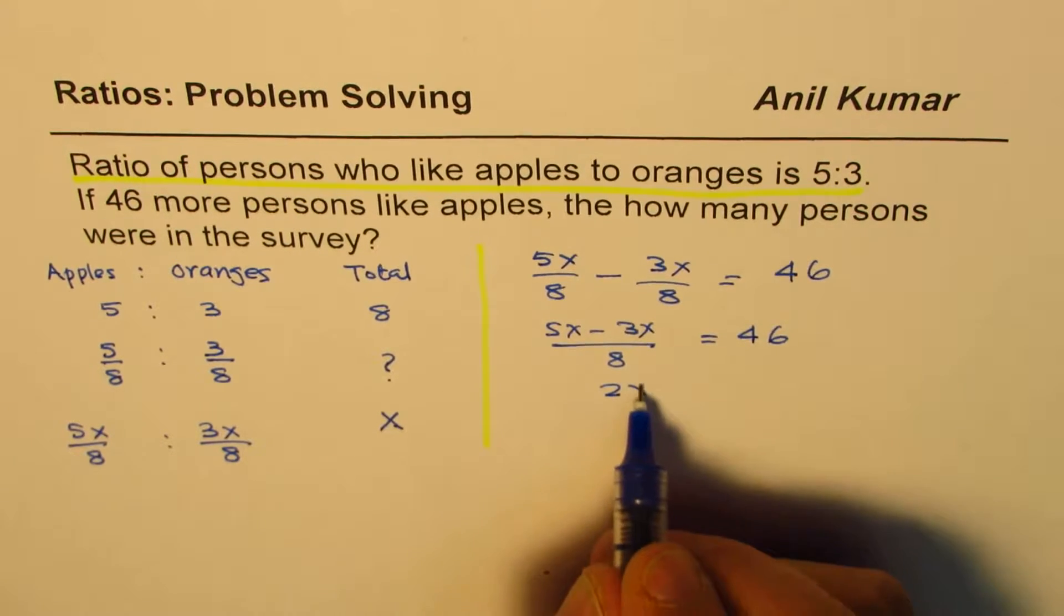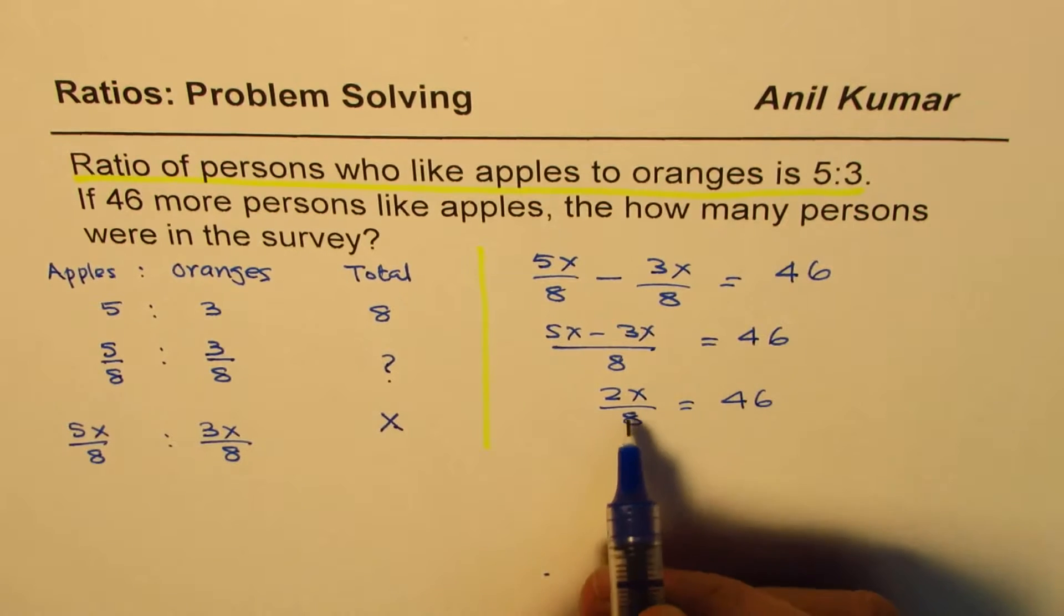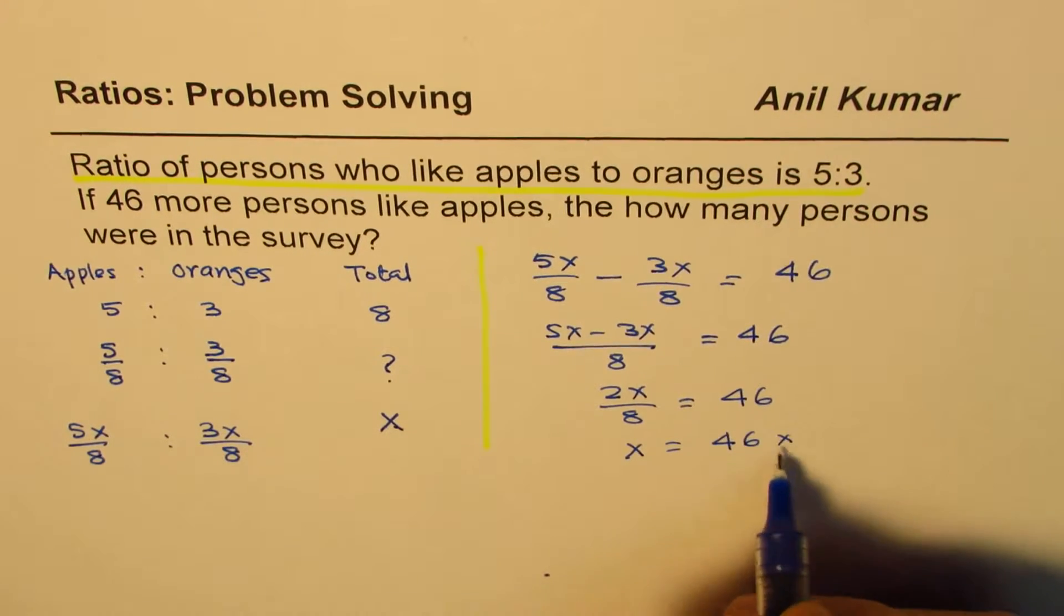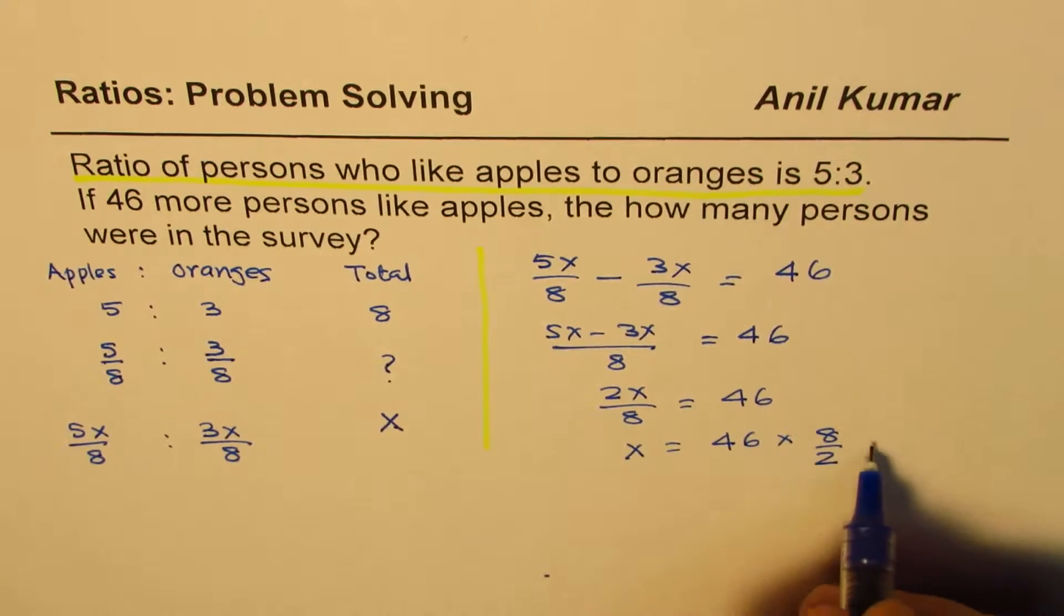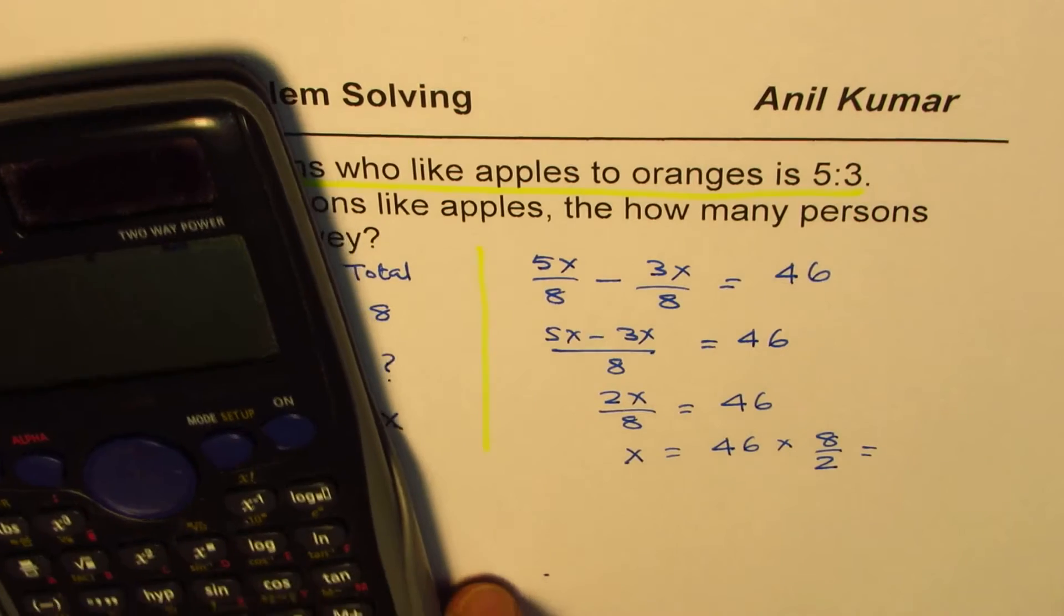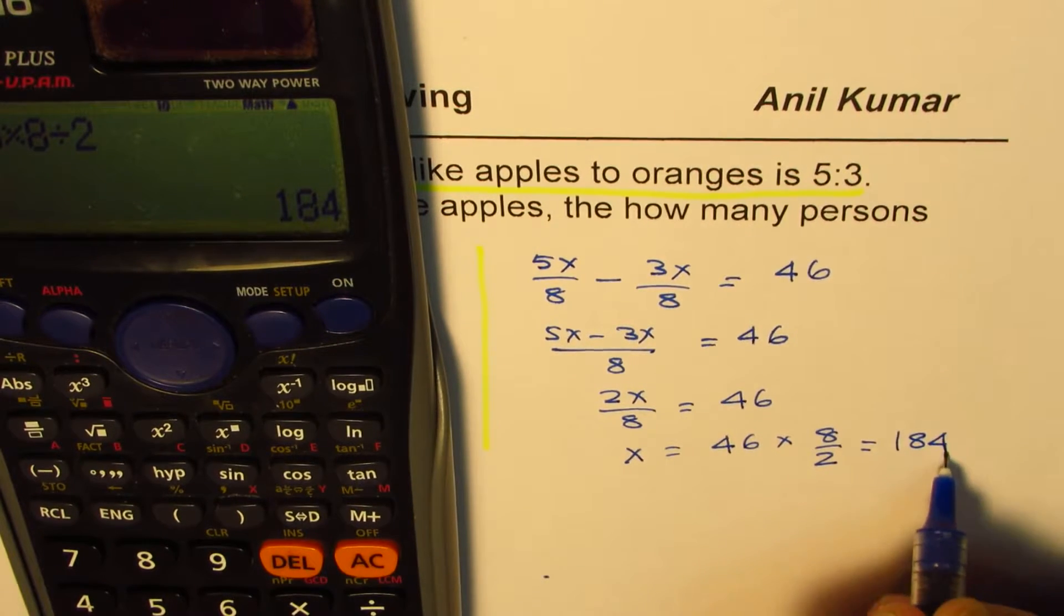And when you take away, you get 2X over 8 equals to 46. And you can find what X is. So X is equals to 46 times 8 divided by 2. Let's use the calculator. 46 times 8 divided by 2, and we get 184.